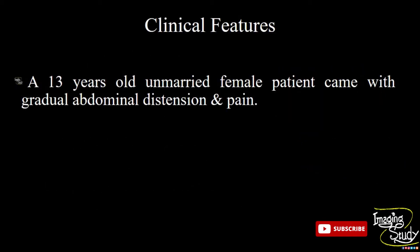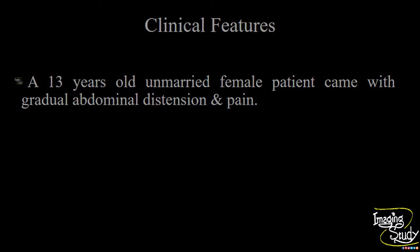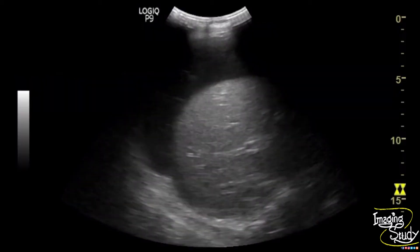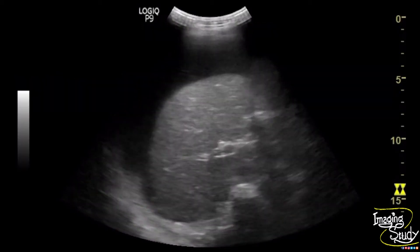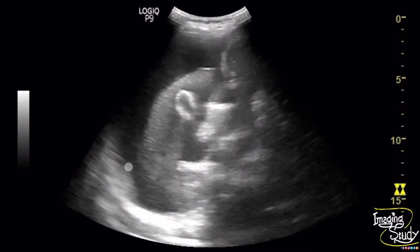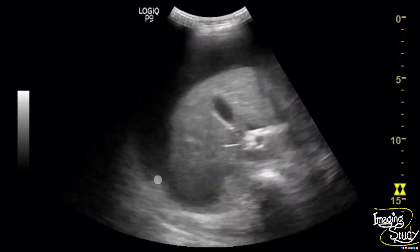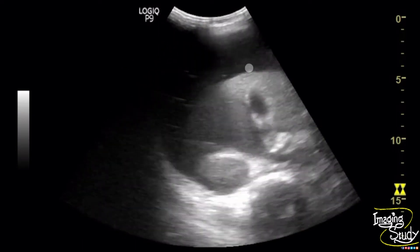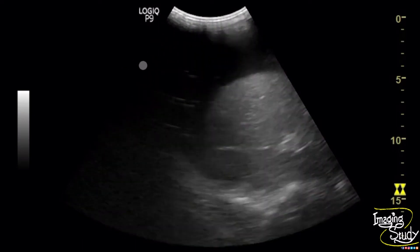A 13-year-old unmarried female patient came with gradual abdominal distension and abdominal pain. On ultrasound, you can see the right hypochondriac region shows a huge amount of peritoneal collection. The liver, gallbladder, and right kidney look normal.